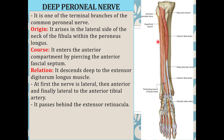The nerve of the anterior compartment of the leg is the deep peroneal nerve, one of the terminal branches of the common peroneal nerve, which itself is a terminal branch of the sciatic nerve. The deep peroneal nerve arises on the lateral side of the neck of the fibula, within the peroneus longus muscle — a muscle of the lateral compartment of the leg. It then enters the anterior compartment by piercing the anterior fascial septum and descends deep to extensor digitorum longus.